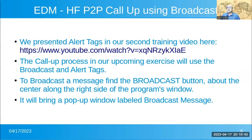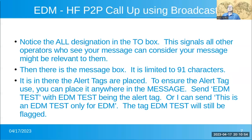To broadcast a message, find the broadcast button — it's about the center along the right side of the program's window. It'll bring up a pop-up window when you click on it, labeled broadcast message. Notice the "all" designation in the TO box. This signals all other operators who see your message can consider your message might be relevant for them. Then there is the message box — it's limited to 91 characters. For the alert tags, that's where you put them, in that message box. To ensure the alert tag use, you can place it anywhere in the message. Send "EDM test" with "EDM test" being the alert tag — it'll find it.